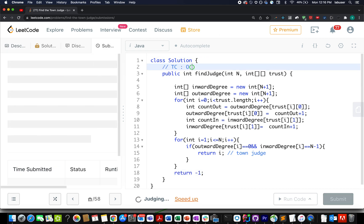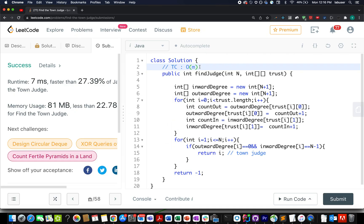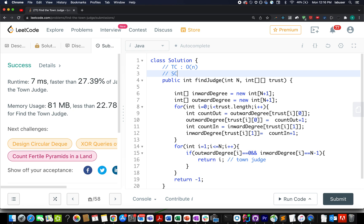The time complexity of this approach is order of n where n signifies the number of nodes present in the town and space complexity is again order of n.